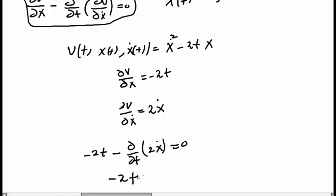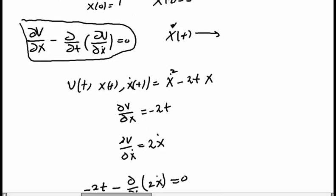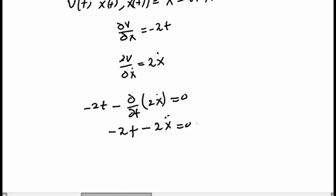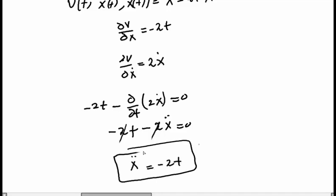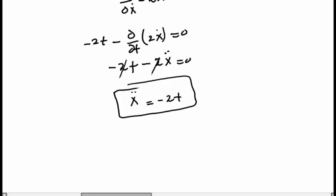Substituting into the Euler-Lagrange equation: ∂V/∂x minus d/dt(∂V/∂x-dot) = 0 gives us −2t minus 2x-double-dot = 0. Dividing by 2 and rearranging, we get x-double-dot = −t.